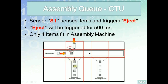Each side assembly machine can only fit up to four items. So if side assembly machine A already has four elements, when the fifth element comes by and is sensed by S1, S1 will simply ignore it because there is no room. The new item will continue on the main conveyor belt and will be sensed by another sensor S2, then pushed by eject solenoid 2 into side assembly machine B.